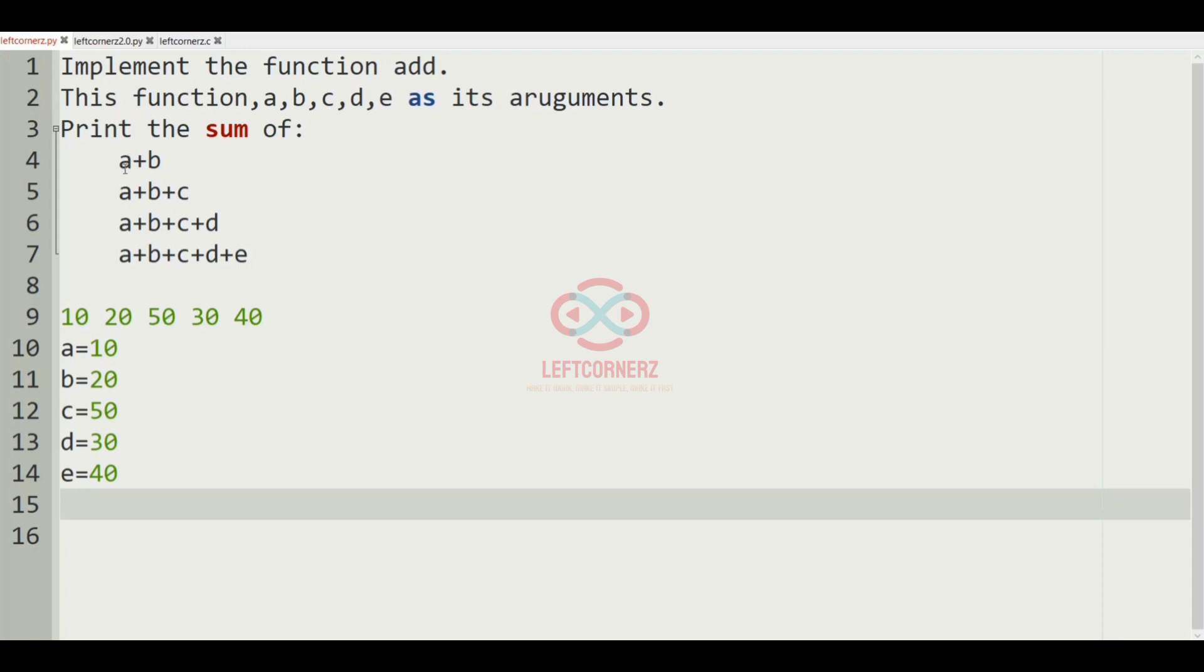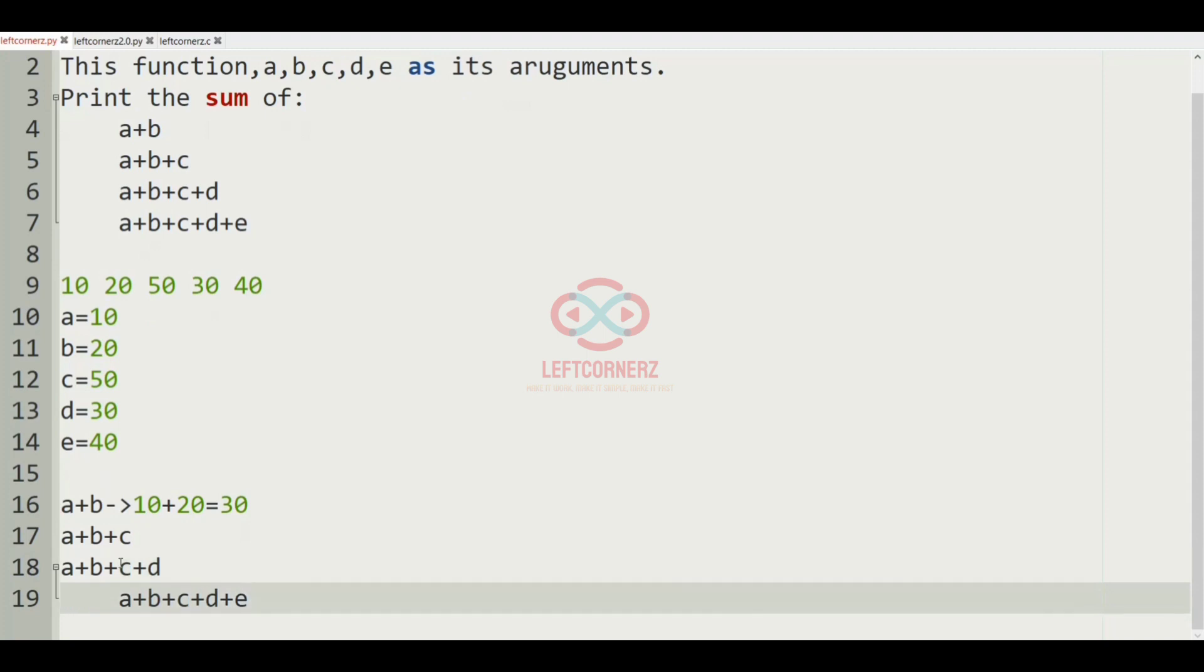So now let us get the sum of a plus b, that is 10 plus 20, which is 30. And then a plus b plus c, which is 10 plus 20 plus 50, which will give you 80.